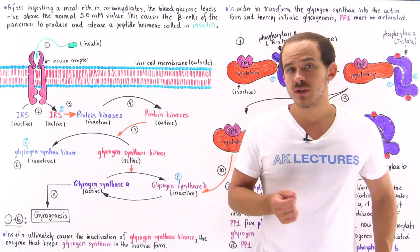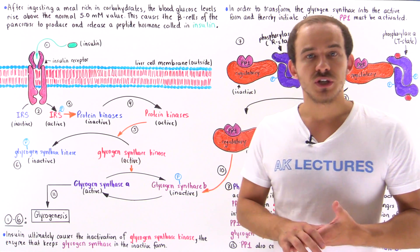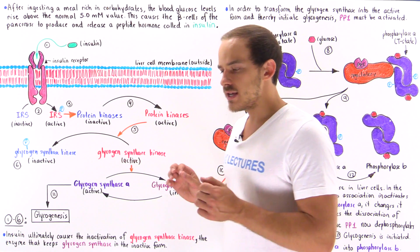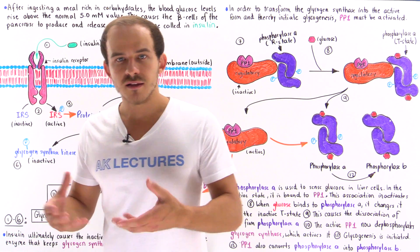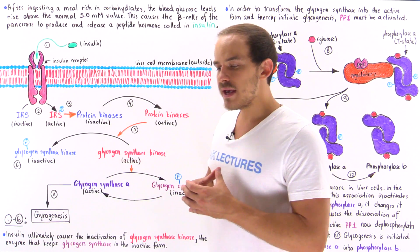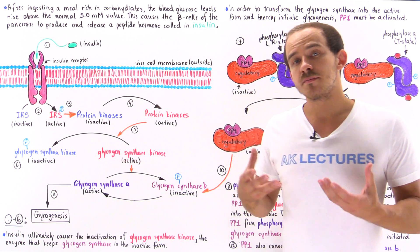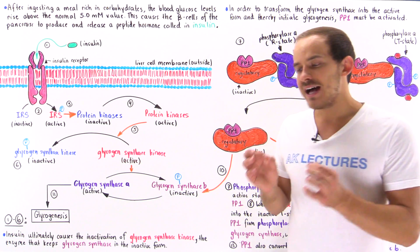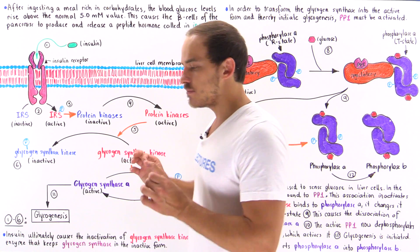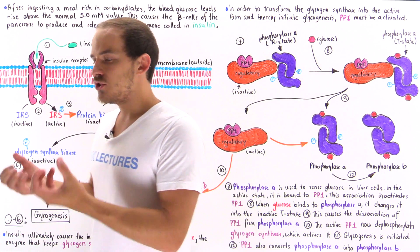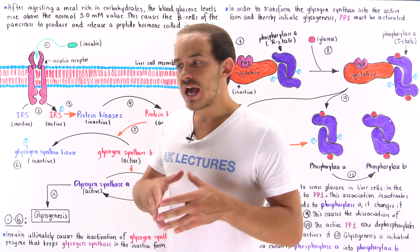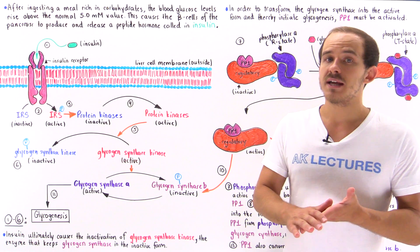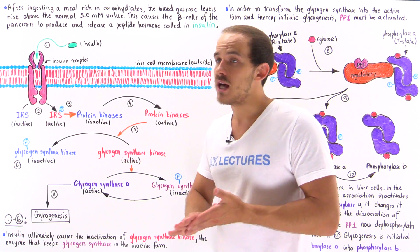Following exercise, we generally tend to ingest a meal that is rich in carbohydrate molecules. The reasoning behind that is we want to give our cells — our liver cells and skeletal muscle cells — the ability to replenish their supplies of glycogen that were used up during that exercise. Now how does this process actually take place? How do our cells, specifically our liver cells, actually regenerate and replenish their supplies of glycogen? This is what I'd like to focus on in this lecture.